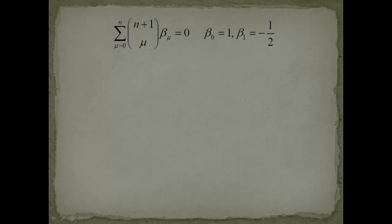This strange looking function had a Taylor expansion using these strange coefficients beta mu. What we know is beta 0 is equal to 1, beta 1 is equal to minus 1/2, and this is very interesting—all the odd values will vanish. We will only have even values.